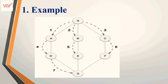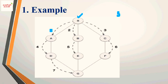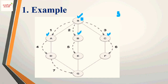Now let us look at an example. We have a graph and we are taking S as the source vertex. We visit S first, so S is the first vertex in the BFS order. S is marked as visited and inserted into the queue.